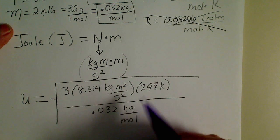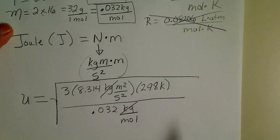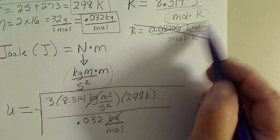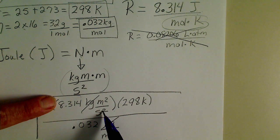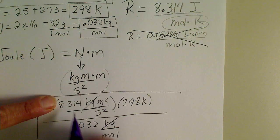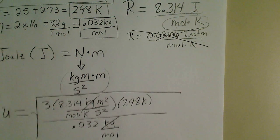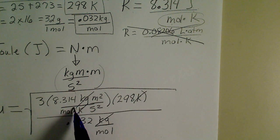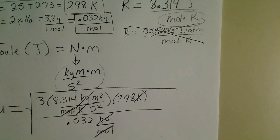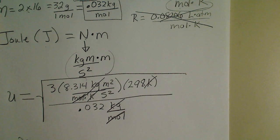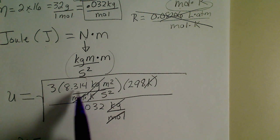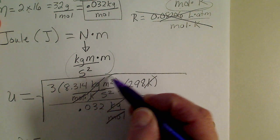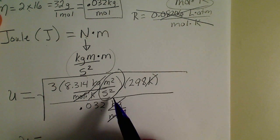Looking at the units, the kilogram here cancels that kilogram. The joule is a kilogram meter per second squared, so that mole and Kelvin still need to go down here. So the Kelvin in our R constant cancels that temperature Kelvin. The mole in the R constant cancels that mole. So when we do this calculation, we're going to take the square root of 3 times 8.314 times 298 divided by 0.032.